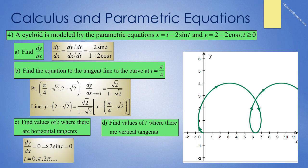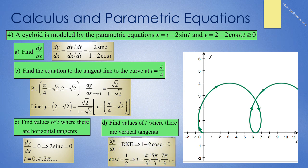Part c asks for values of t where there are horizontal tangents. Horizontal tangents occur where dy/dx equals 0, so we set the numerator sine t equals 0, giving t equals 0, pi, 2pi, etc. Part d asks for vertical tangents, which occur when the denominator 1 minus 2 cosine t equals 0, meaning cosine t equals 1/2, giving t equals pi/3, 5pi/3, 7pi/3, etc.